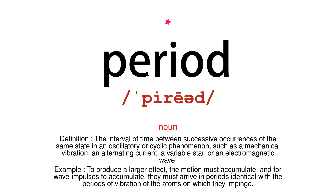Noun. Definition: the interval of time between successive occurrences of the same state in an oscillatory or cyclic phenomenon, such as a mechanical vibration, an alternating current, a variable star, or an electromagnetic wave. Example: to produce a larger effect, the motion must accumulate, and for wave impulses to accumulate, they must arrive in periods identical with the periods of vibration of the atoms on which they impinge.